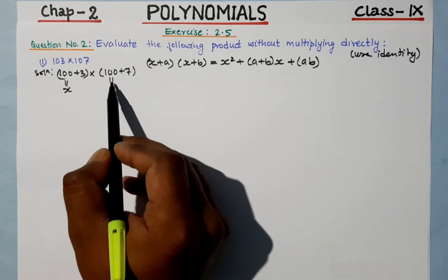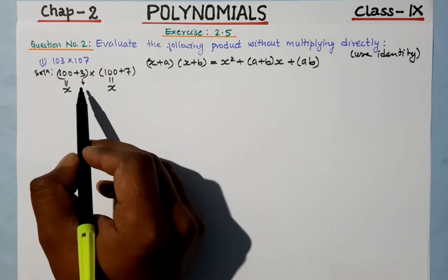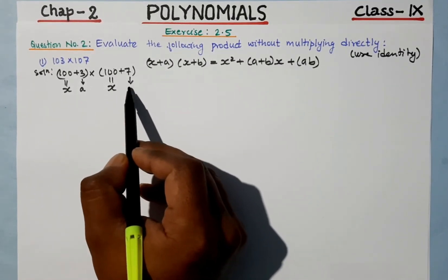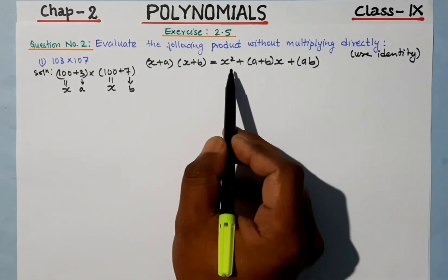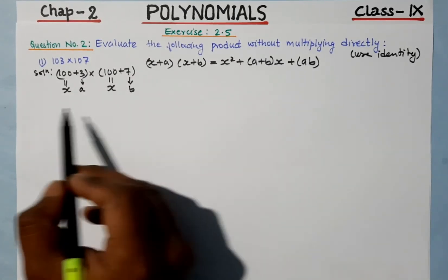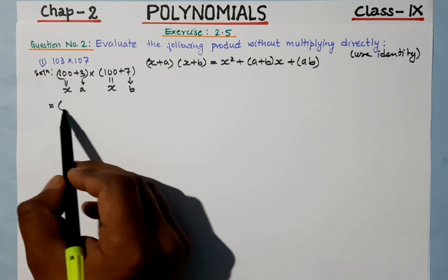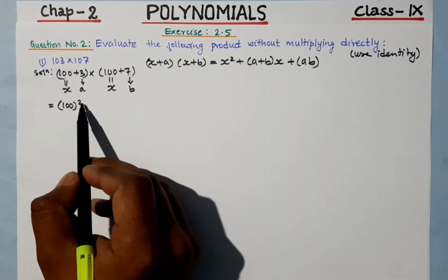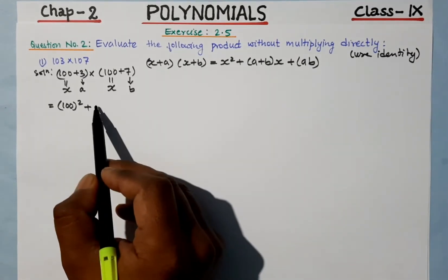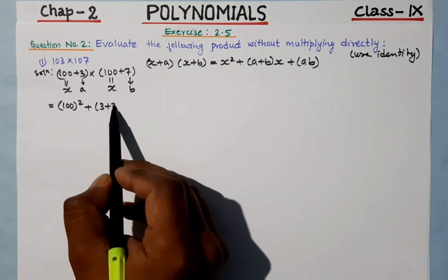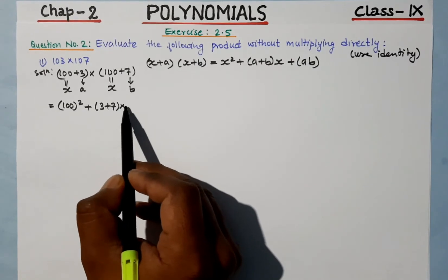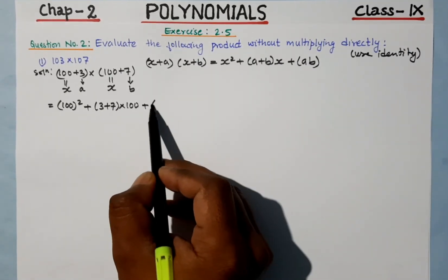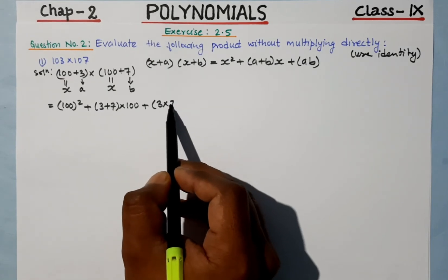So here, we identify x as 100, a as 3, and b as 7. That means we can use this identity with x = 100, a = 3, and b = 7.